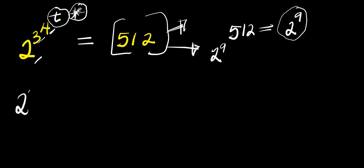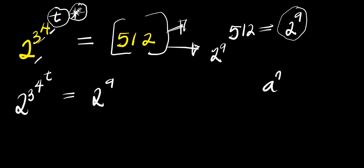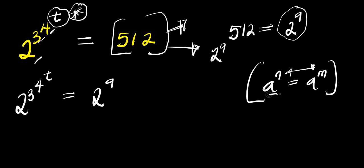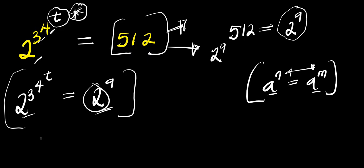So we now have 2 to the power of 3, to the power of 4, to the power of t, and this equals 2 to the power of 9. Using the identity that if a to the power of n equals a to the power of m, you equate the exponents because the bases are the same. Applying that rule here, since both bases are 2, we are left with 3 to the power of 4 to the power of t, and this equals 9.